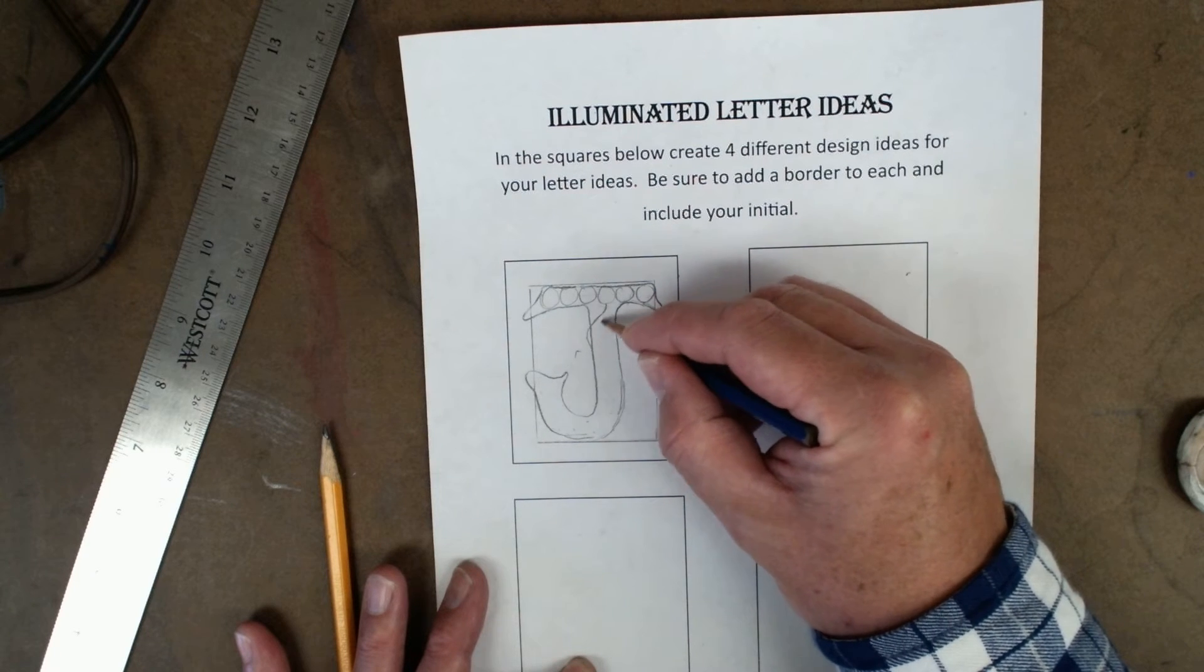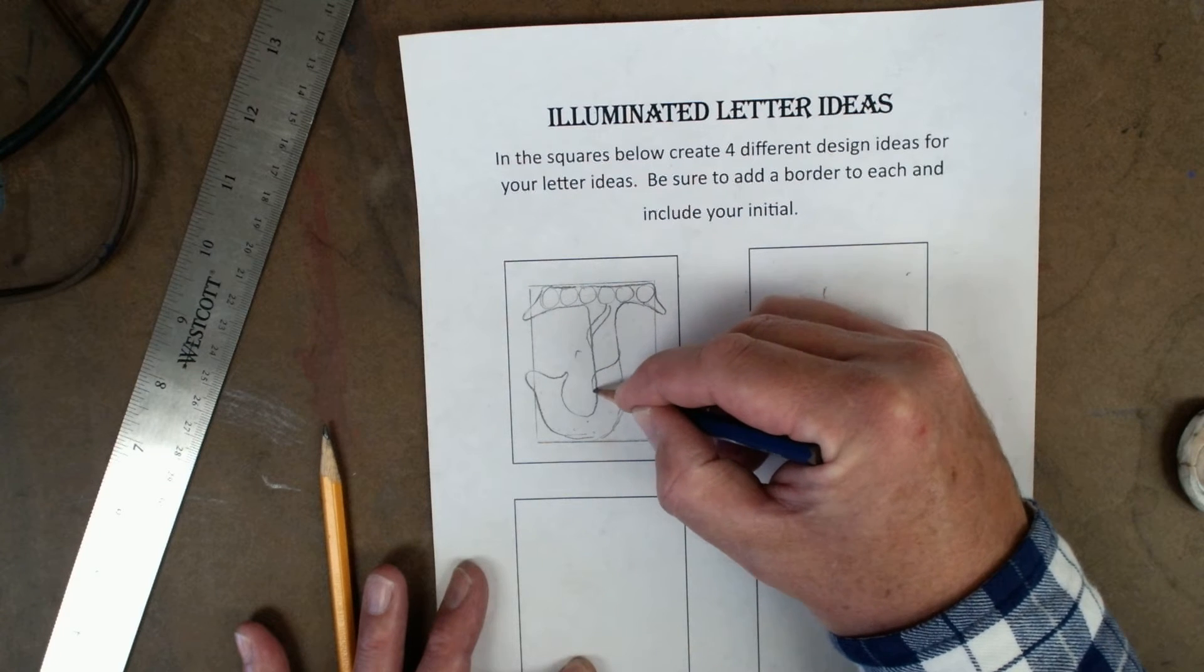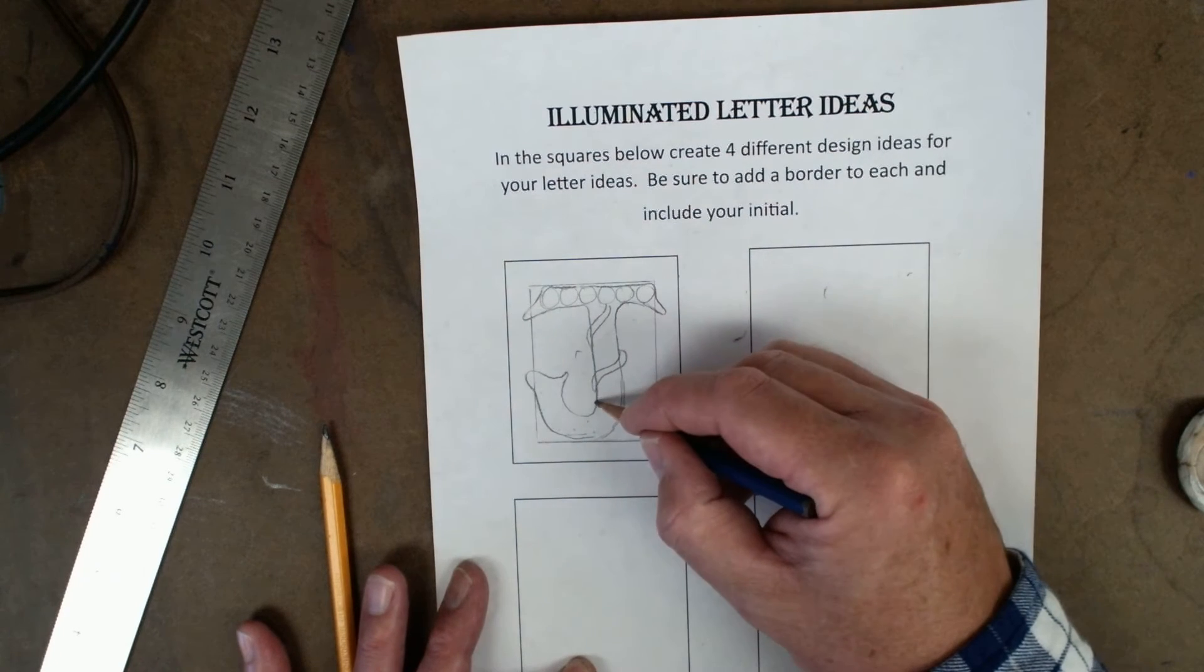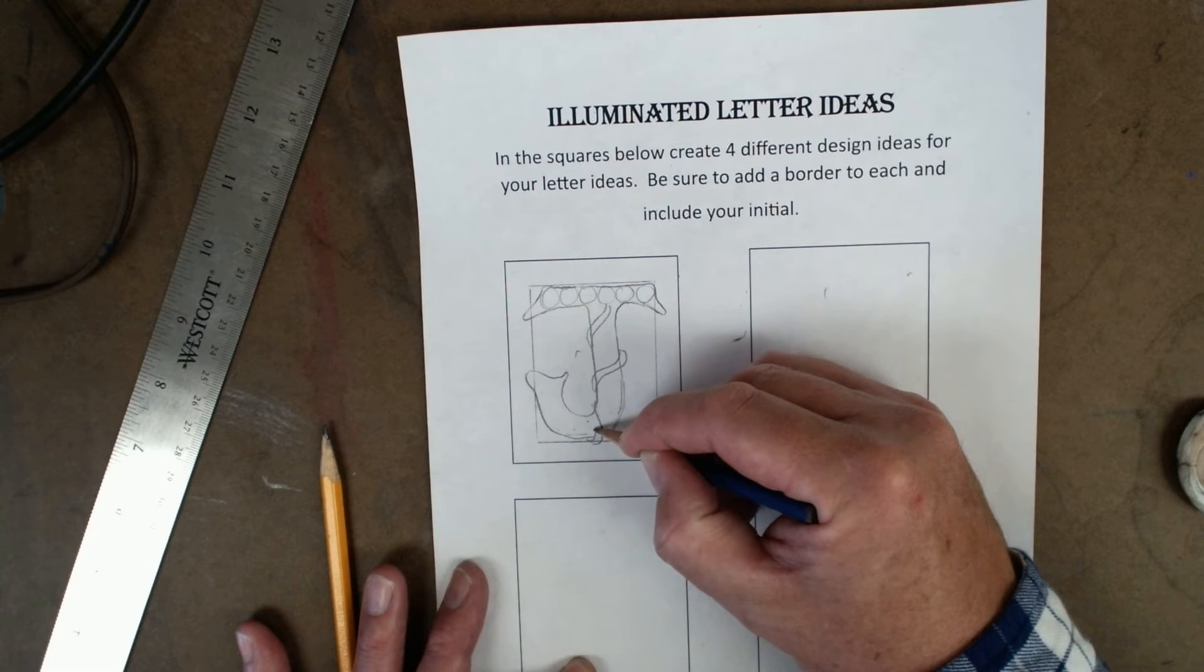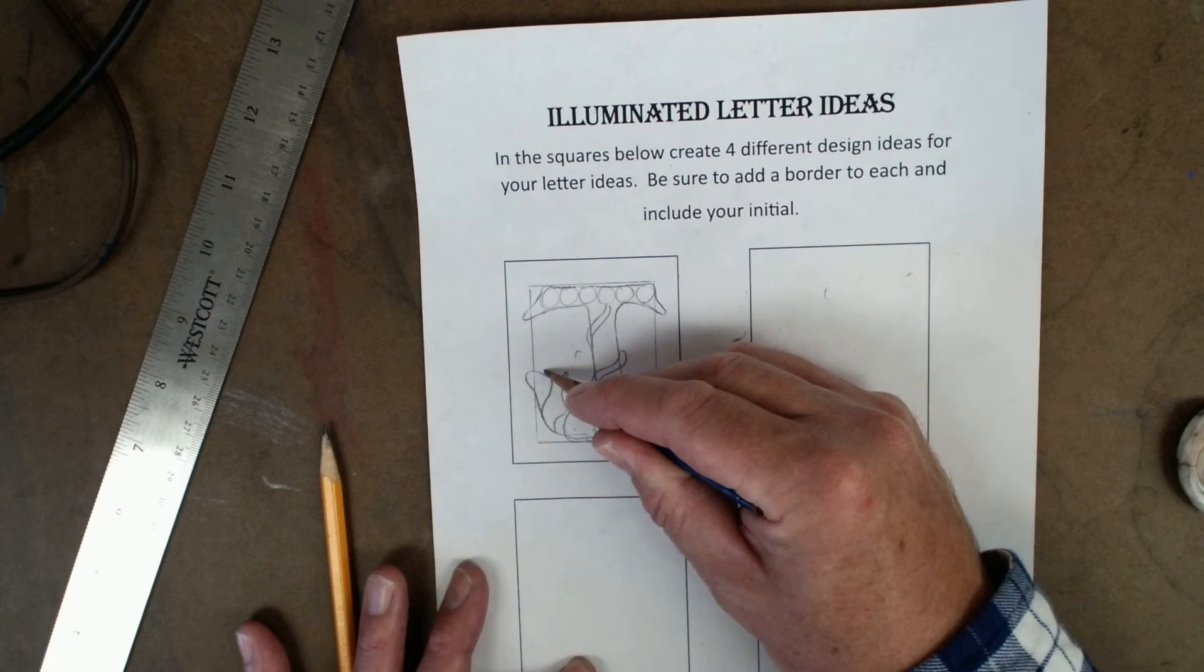And then maybe I'm going to have something that looks like it's kind of wrapping around, that'd be kind of a cool idea. Just wrap around my J, kind of like a vine, maybe a snake, that's kind of cool. I'm going to go ahead and kind of add that in through there.